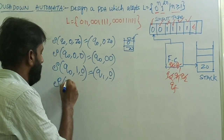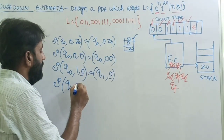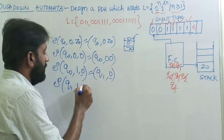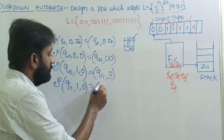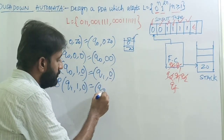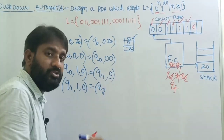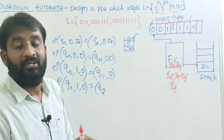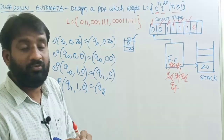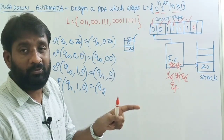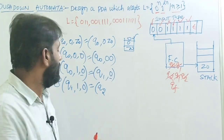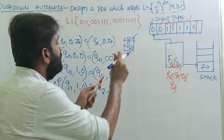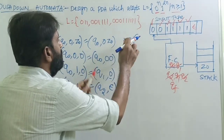Transition δ(q1, 1, 0) — input symbol is one, top of stack is zero — move to state q2 because on q2 we can confirm two consecutive ones have been read. For two consecutive ones we pop out one zero from the stack. To indicate pop: δ(q1, 1, 0) = (q2, ε), so that zero is removed from the stack.